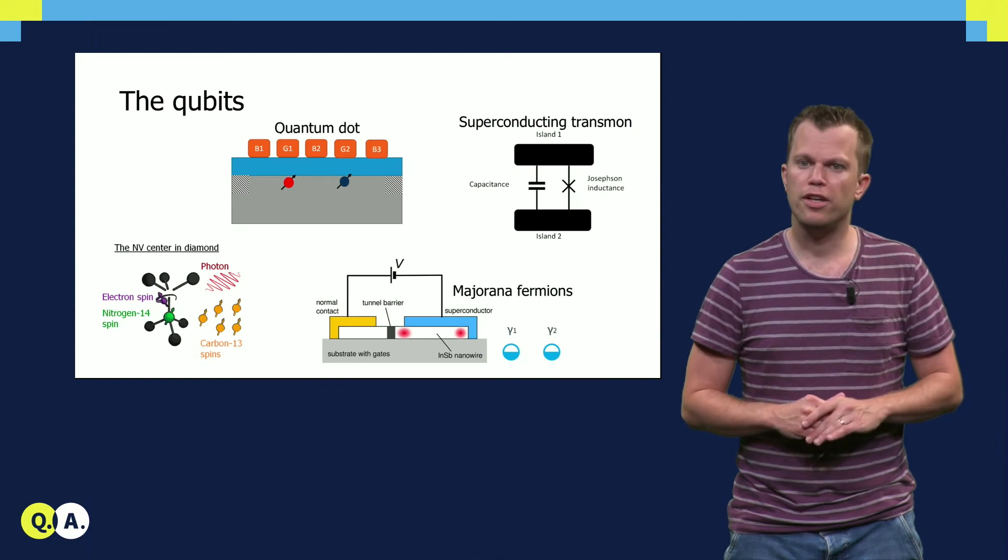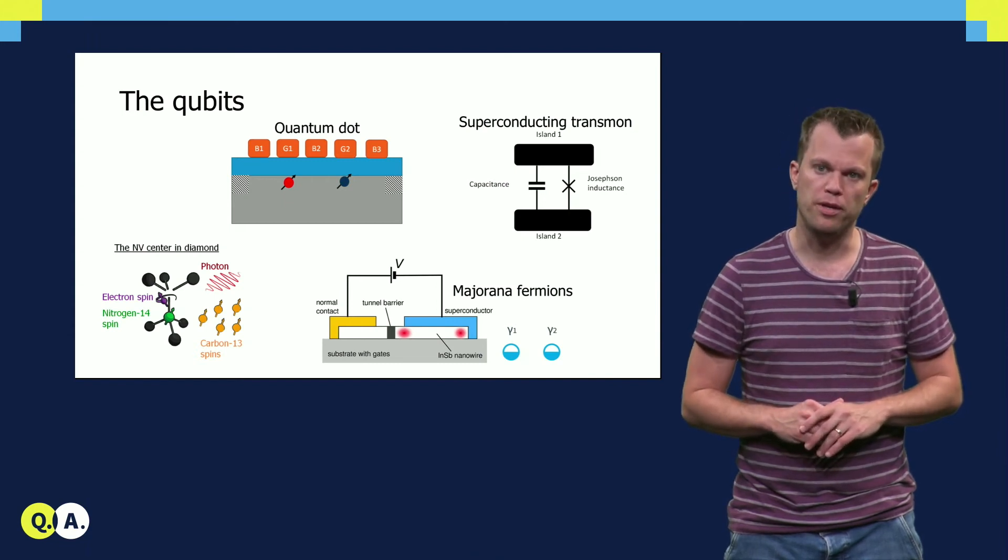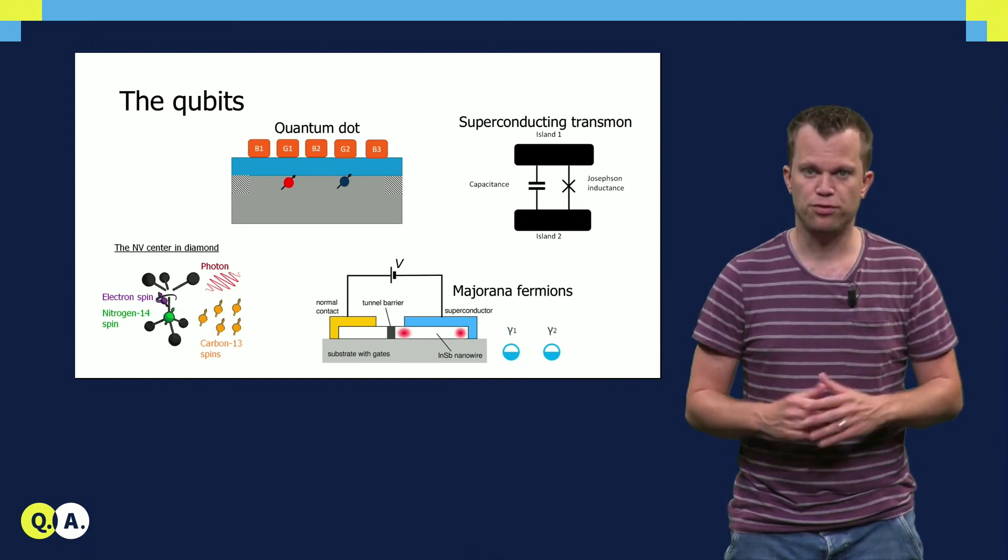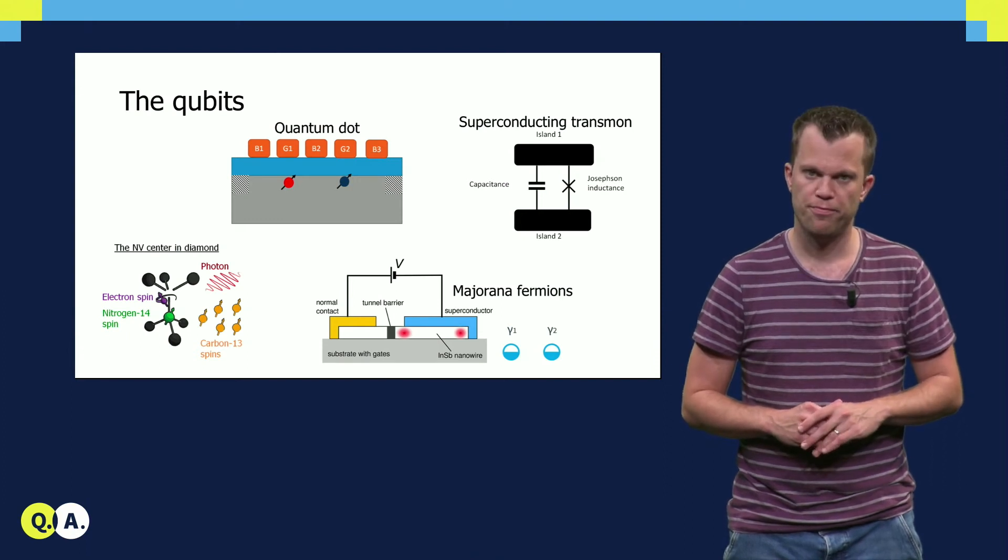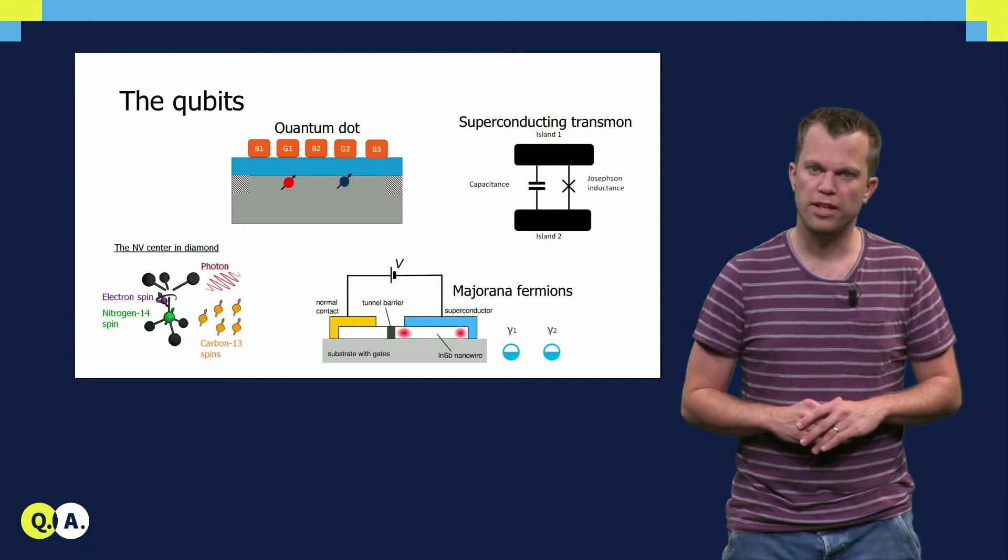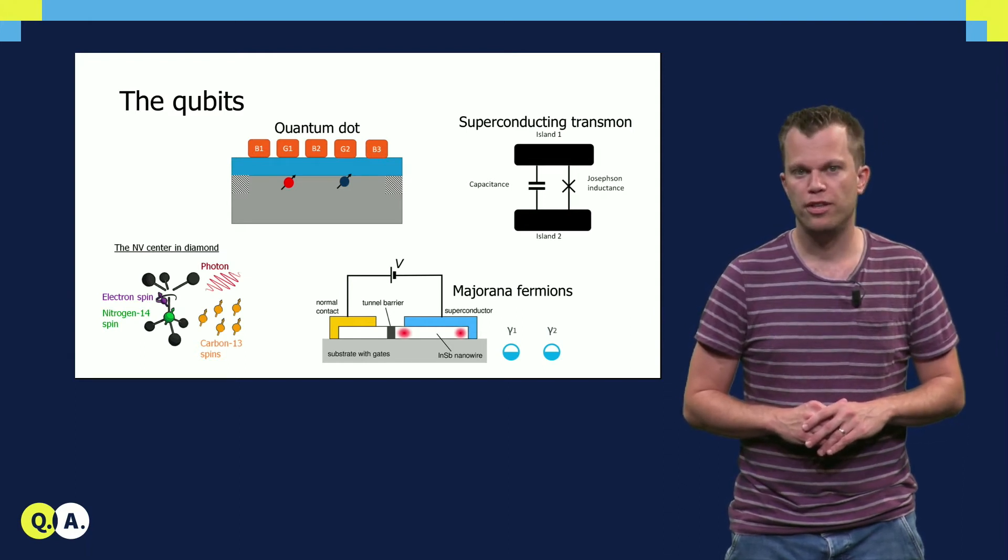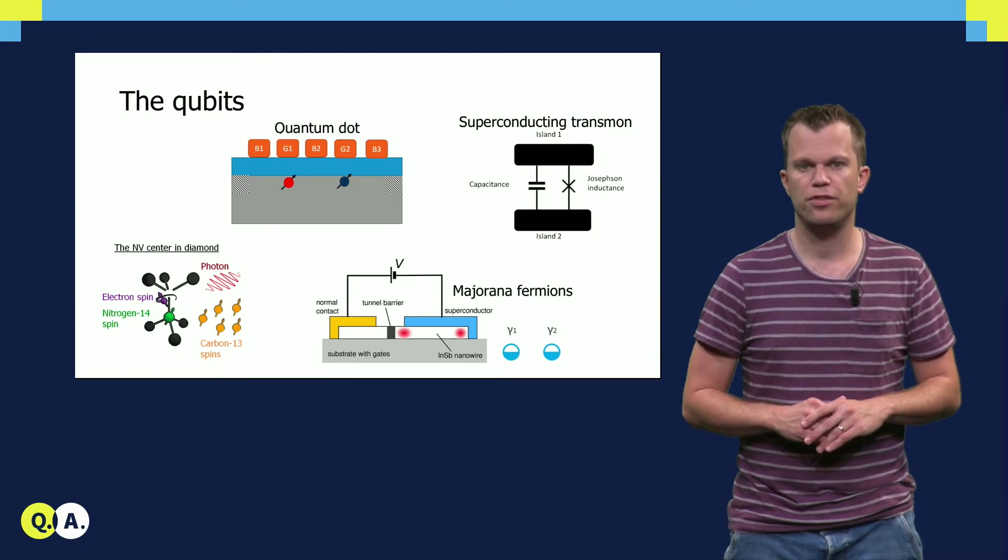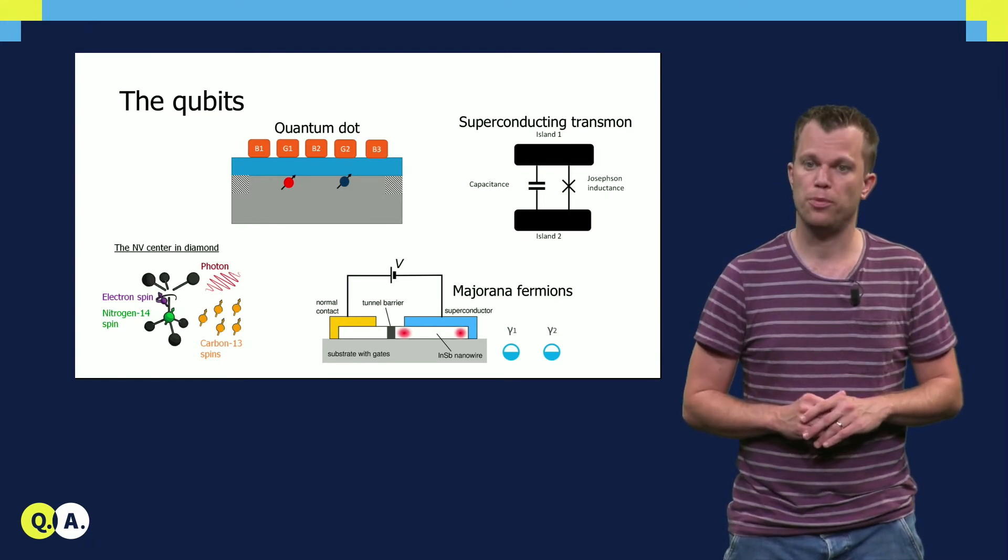Today we do not know what the best qubit platform will be, and so there is an active race going on between all these different platforms. We also often find out that developments made in one platform can be implemented into other platforms, and so all these activities strongly benefit from each other.